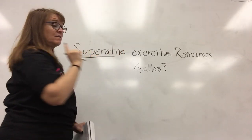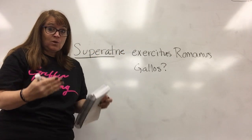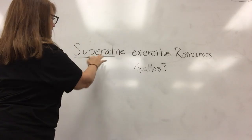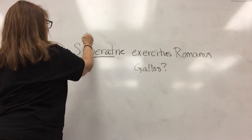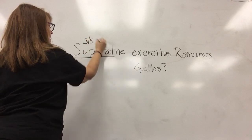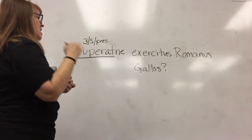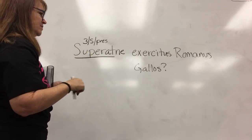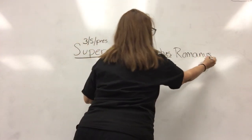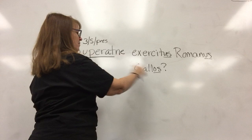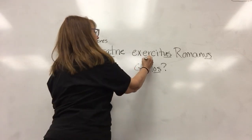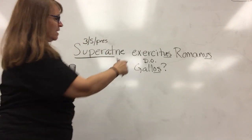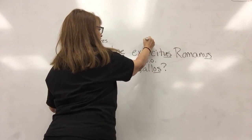That -ne doesn't really do anything in the translation except make it a question. When I'm looking at this verb, I can kind of hide that in my mind. Supero — that's third person singular, present tense. So I know he, she, or it is overcoming. Now I'm going to look for a subject, so I look at these endings: exercitus, Romanos, and Galos. Right away — os — I know os is the direct object ending. So is this my subject or that? Well, this is definitely in the nominative case, so I'm going to make that my subject.